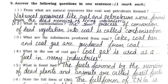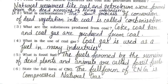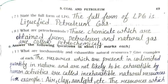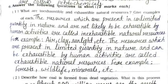Fifth: the fuels formed by the remains of dead plants and animals are called fossil fuels. Sixth: the full form of CNG is Compressed Natural Gas. Seventh: the full form of LPG is Liquefied Petroleum Gas. Eighth: those chemicals which are obtained from petroleum and natural gas are called petrochemicals.